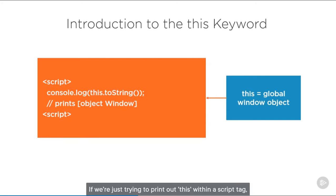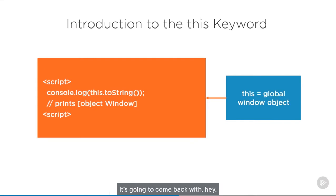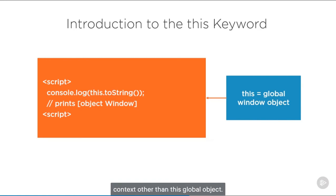If we're just trying to print out 'this' within a script tag, you have to remember that JavaScript is running within the global window object that's available in every browser. So if you try to just print out 'this' to the console, it's going to come back as the global window object, because you're not within any context other than that global object.